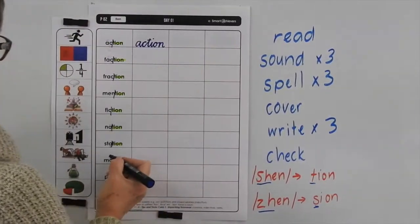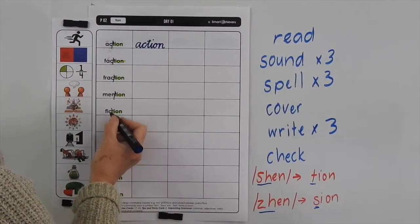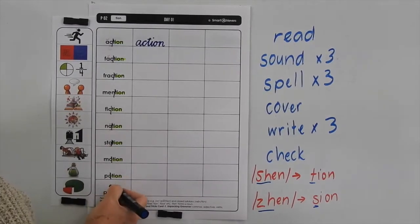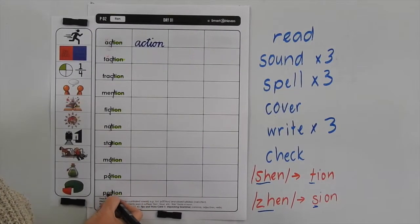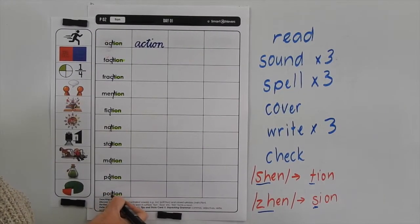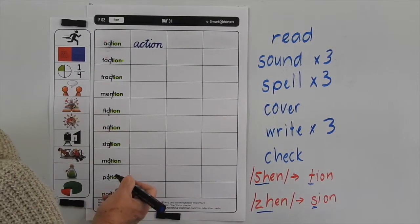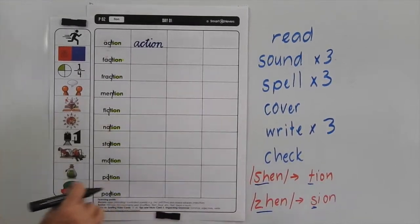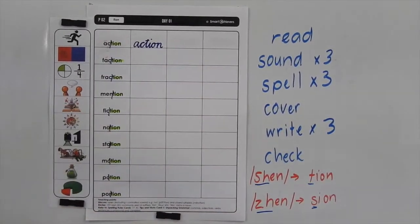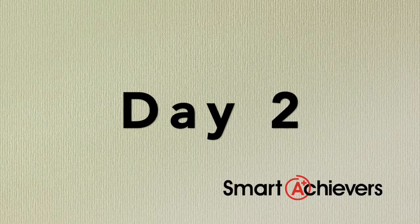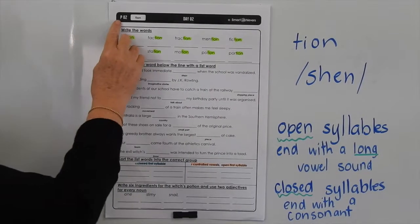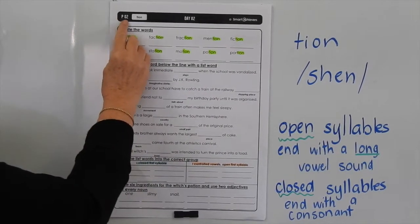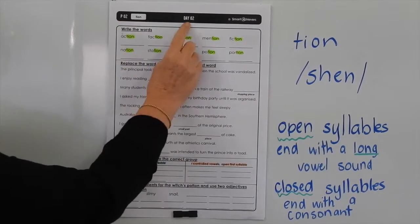Now when you get down to these ones, don't forget these R-controlled vowels — O, R — are making a long vowel sound. You can finish the rest of those. This is level P, list two.